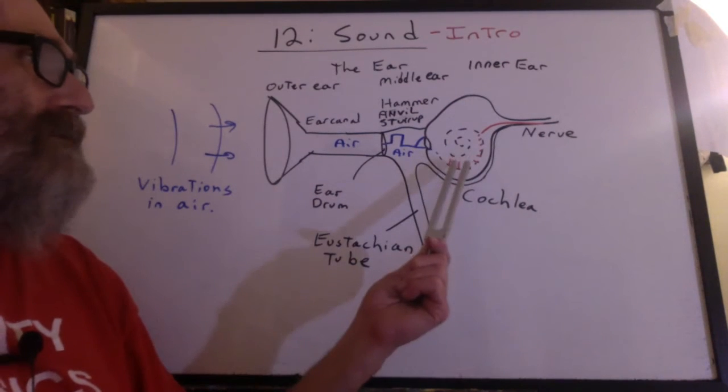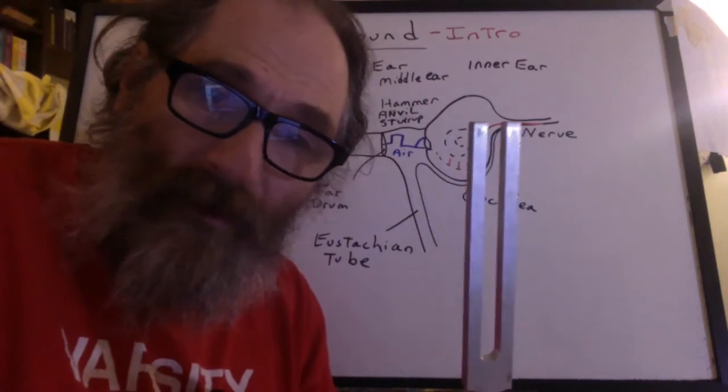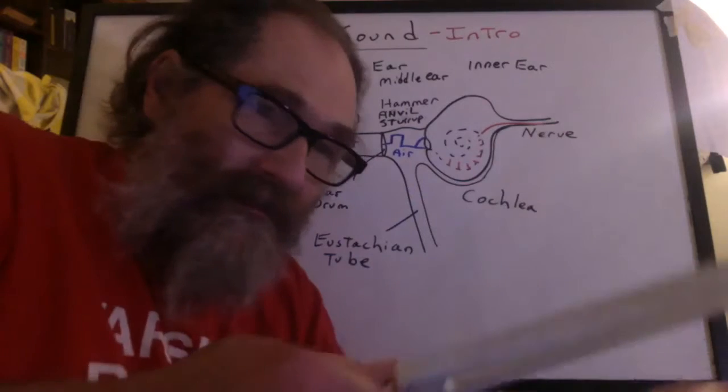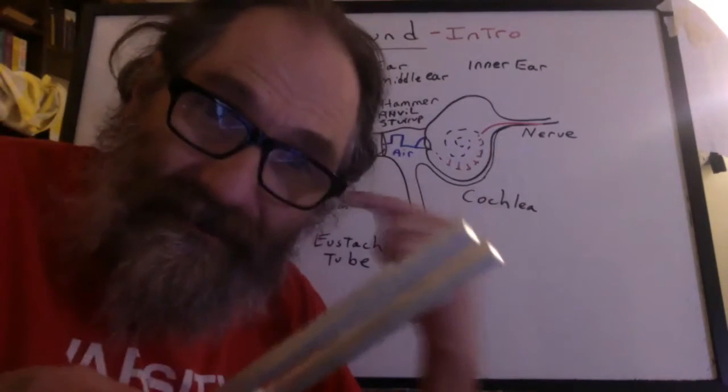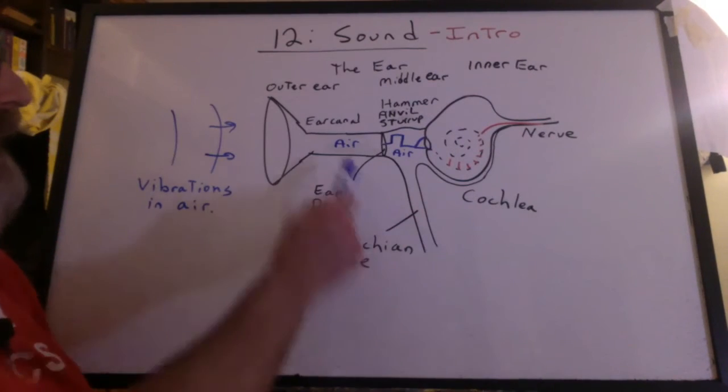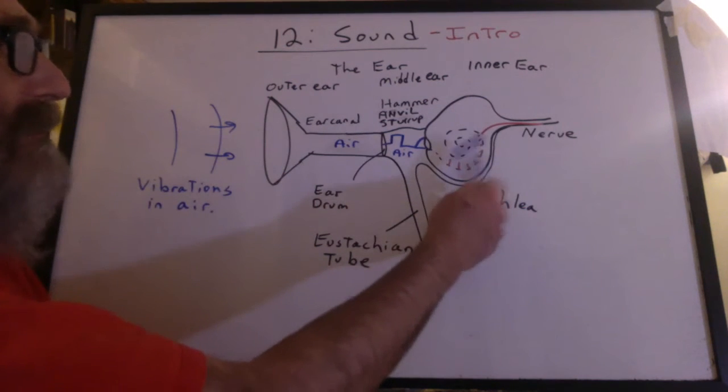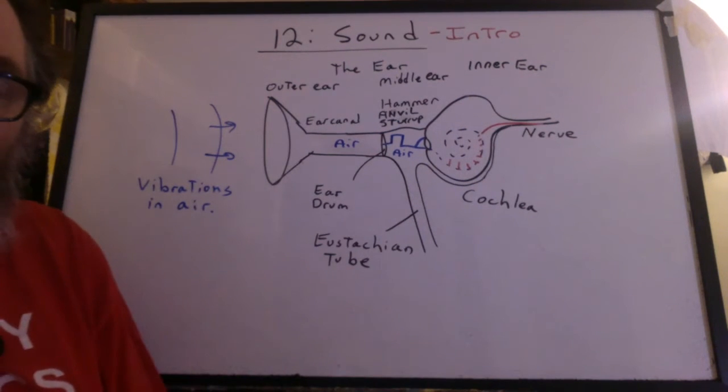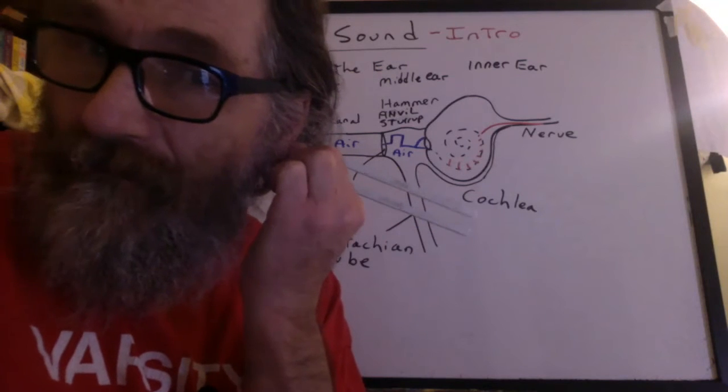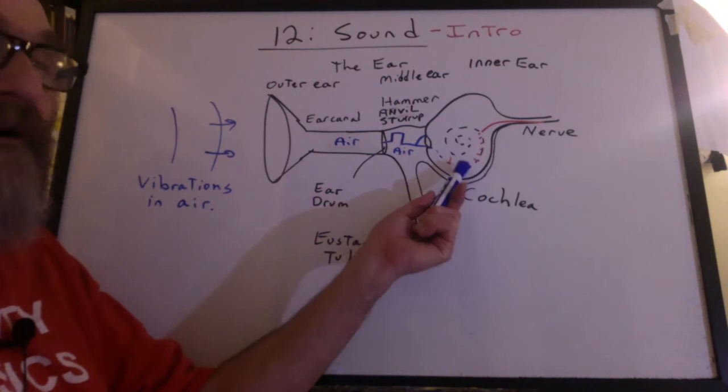Well, we can demonstrate that these nerve endings actually pick up the sound by putting a tuning fork to your head. At school, I take the tuning fork, strike it, put it to your head, and you put your fingers in your ears. You'll hear the sound inside your head. What's going on is that the sound isn't coming through your ear. It's going right through your skull and vibrating the nerve endings directly. This is actually a test to see if your nerve endings are functional by putting a tuning fork right behind your ear. If the nerve endings are functional, you'll hear the sound.